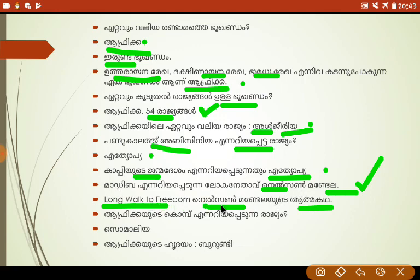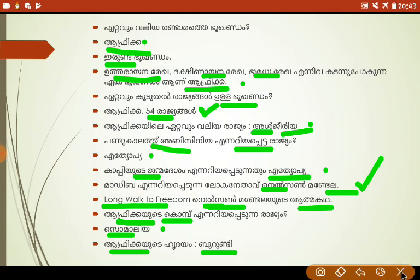Afrikaans are Somali. Afrikaans are Burundi. Afrikaans are Somali. The Abyssinian name is Ethiopia — this is Ethiopia.